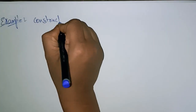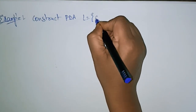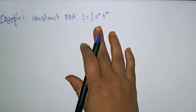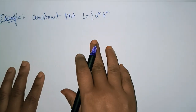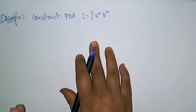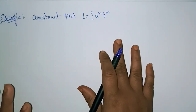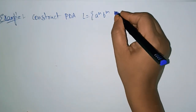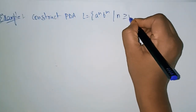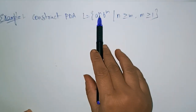Construct a pushdown automata for the given language: a^n b^m. In the previous video I had taken a^n b^n, which means the same number of a's followed by the same number of b's. But here n ≠ m, so you can take different numbers of a's and b's, but a's should be followed by b's only, such that n ≥ m and m ≥ 1.